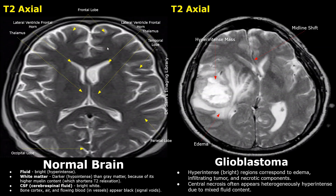On the left, we have a T2-weighted image of a normal brain. T2-weighted images highlight fluid as bright or hyper-intense. The white matter appears darker or hypo-intense than the gray matter because of its higher myelin content, which shortens T2 relaxation.